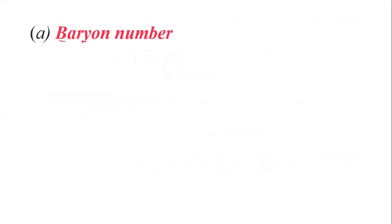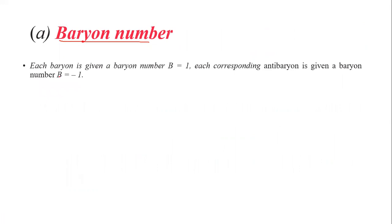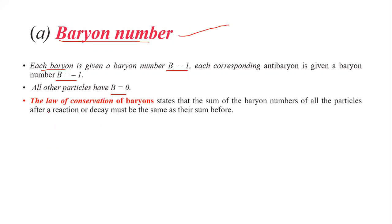That's the law of conservation of Baryon number. Each Baryon is assigned Baryon number B equal to 1. The corresponding antiparticle has B equal to minus 1. All other particles have B equal to 0.